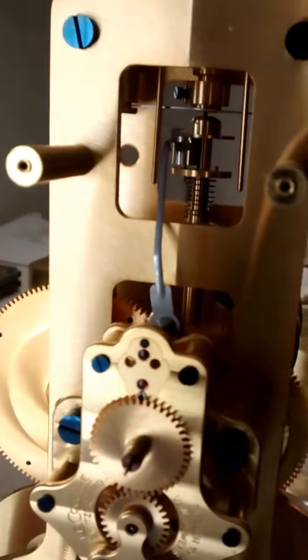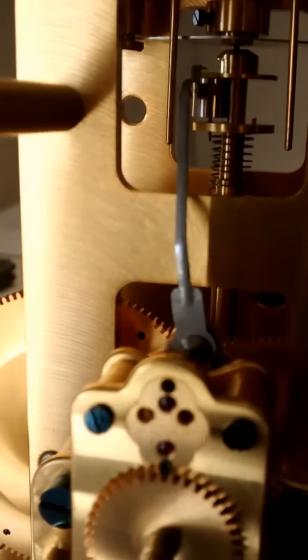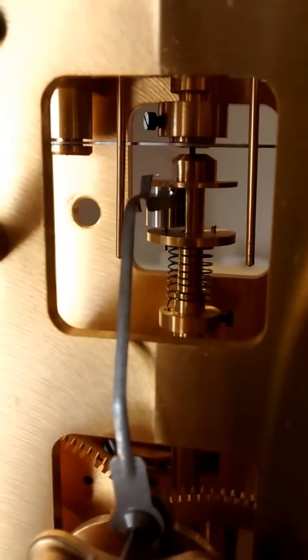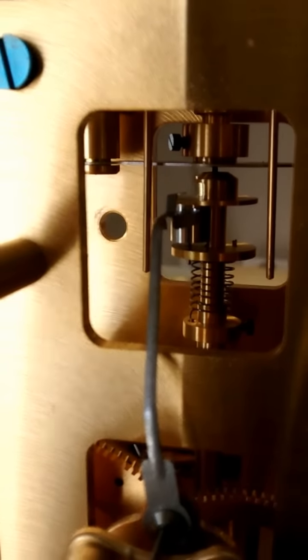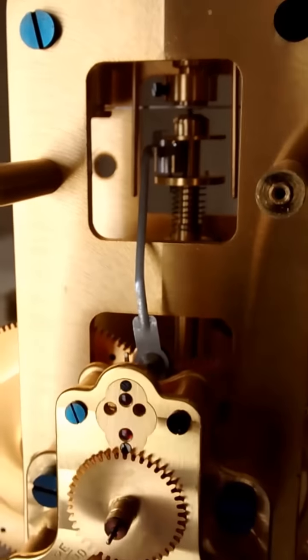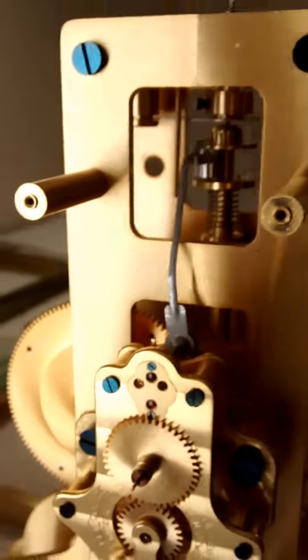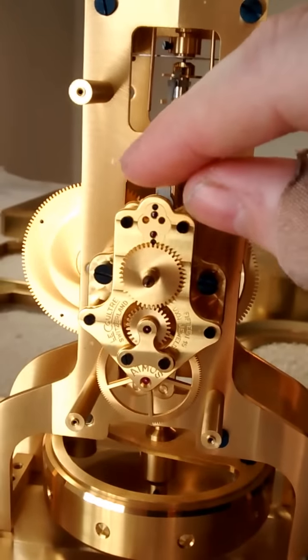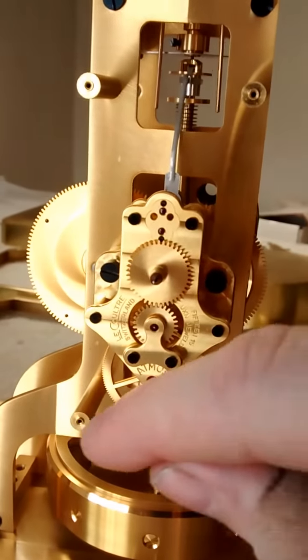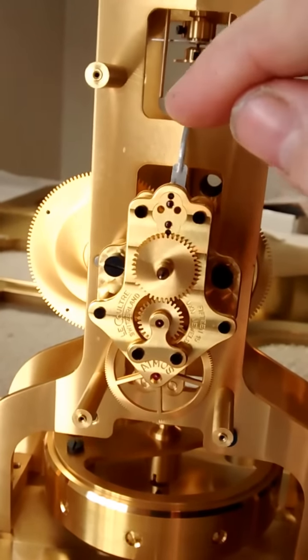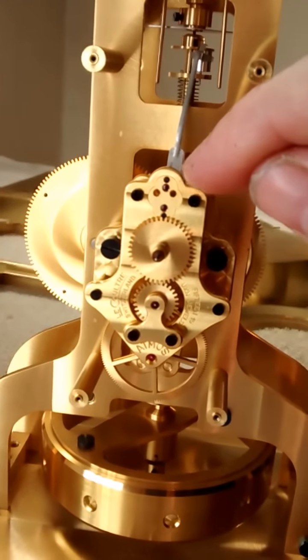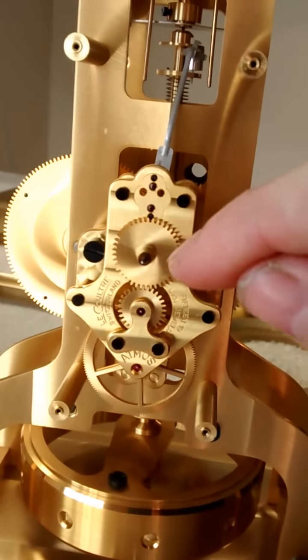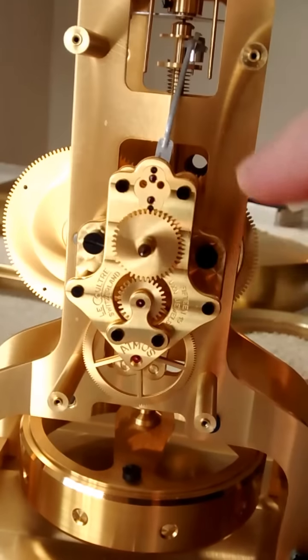Now this is the pallet fork. That's the aluminum metallic colored part that's protruding from the movement and participating in the action with the roller. And when you start your clock, after you've gotten it level, you're going to move your hands clockwise only. Never go back. If you go back, you can bend either a tooth on your escape wheel, or you can bend a jewel on your pallet fork. You set your hands only clockwise, never going backwards.